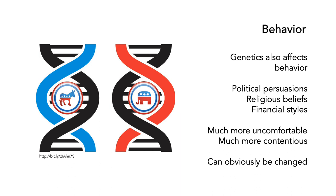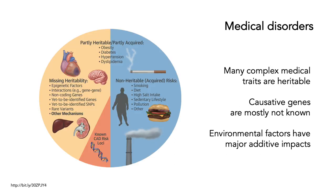Behaviour can also be inherited. Genetics has definitely been shown to affect behaviour — things as diverse as political persuasions, religious beliefs, and financial styles. This makes people much more uncomfortable and is also much more contentious, because we think of these as characteristics we can change. But we become pre-encoded with a series of predilections towards particular types of behaviour. This predilection carries through into medical disorders, so many complex medical traits are heritable. Environmental factors have major additive impacts — genetics is not everything. But genetics matters a lot in medical traits like obesity, diabetes, hypertension, and others.